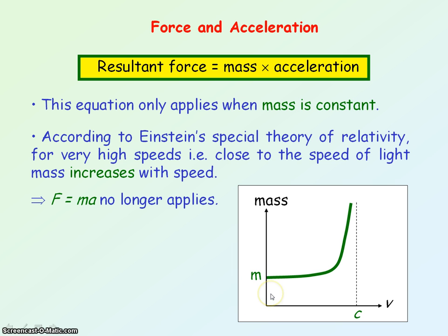However, for very low speeds — and generally in our everyday lives, objects are moving at speeds much, much less than the speed of light — the mass of the object is constant, and so we can use F equals mA.